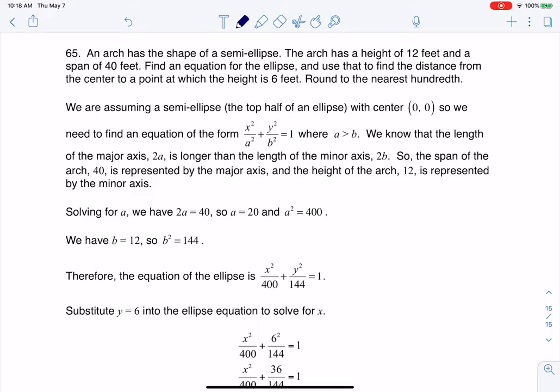Hey Mat31, I had a question coming out of section 8.1, number 65. Here we were talking about an arch that was shaped like a semi-ellipse, height was 12, spanned 40 feet. Find the equation of the ellipse and then use that to find the distance from the center to a point at which the height is six feet.